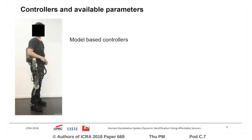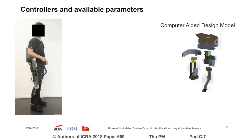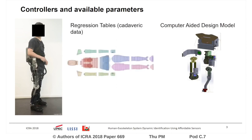The advanced model-based controller schemes rely on the accurate knowledge of the model dynamic parameters. These parameters may be available if a good computer-aided design model of the robot is available, while the human parameters are usually obtained from regression anthropometric tables.